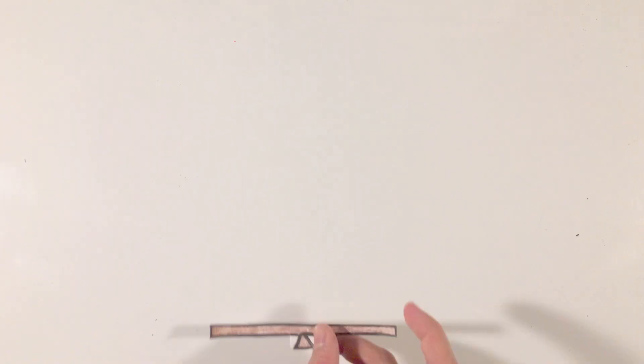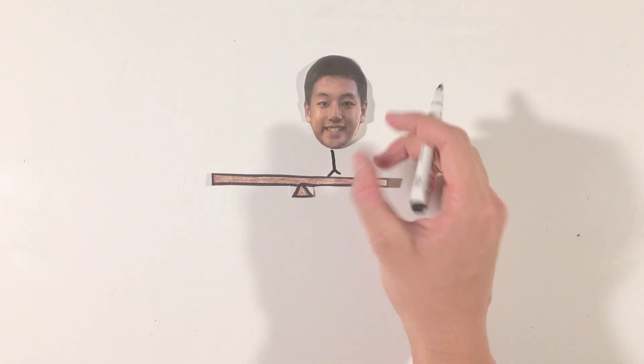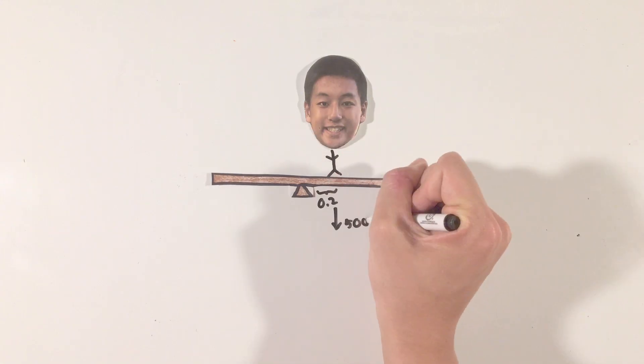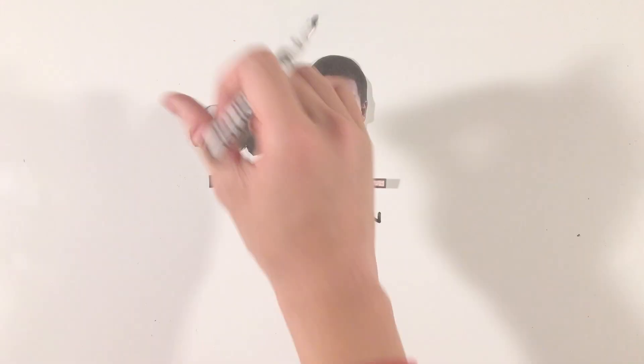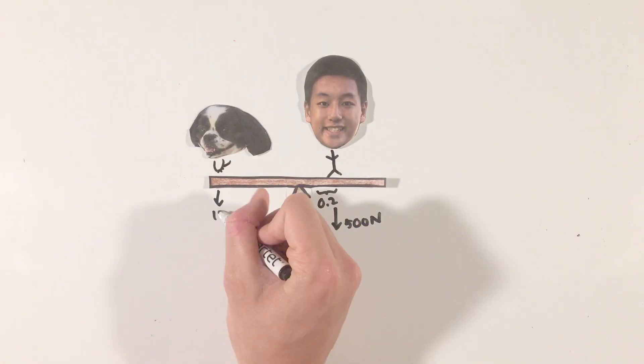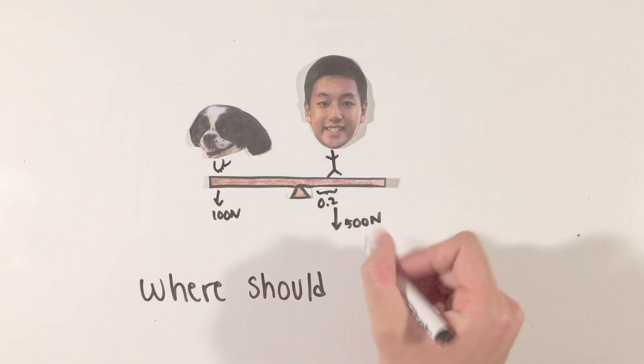When it comes to solving torque problems, there's two main steps we need to think about. For example, let's calculate where on this seesaw Patch, who weighs 100 newtons, would need to sit in order to balance out Jason, who weighs 500 newtons and sits 0.2 meters away from the seesaw's fulcrum.